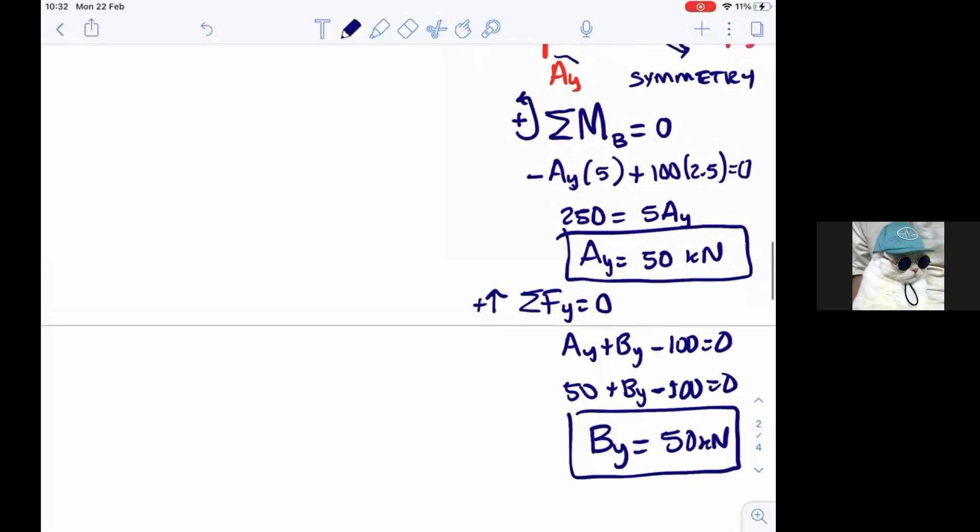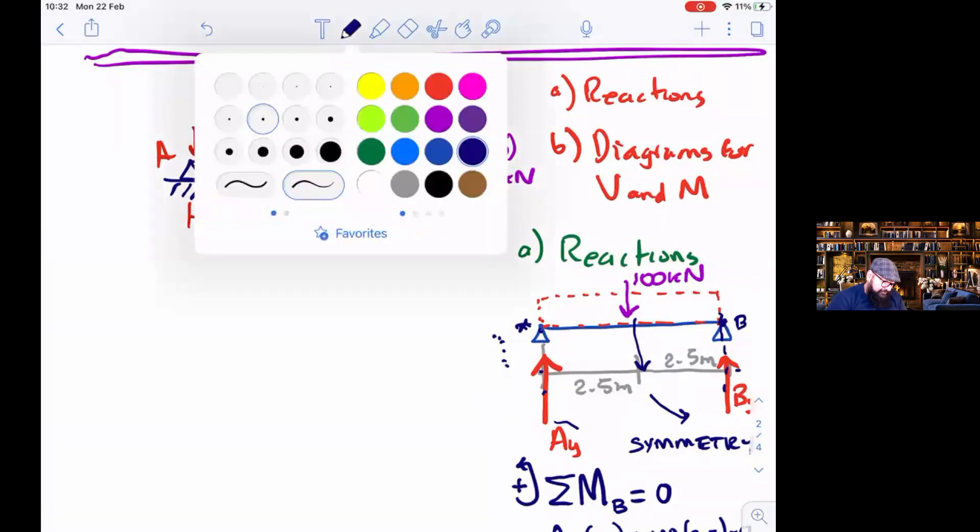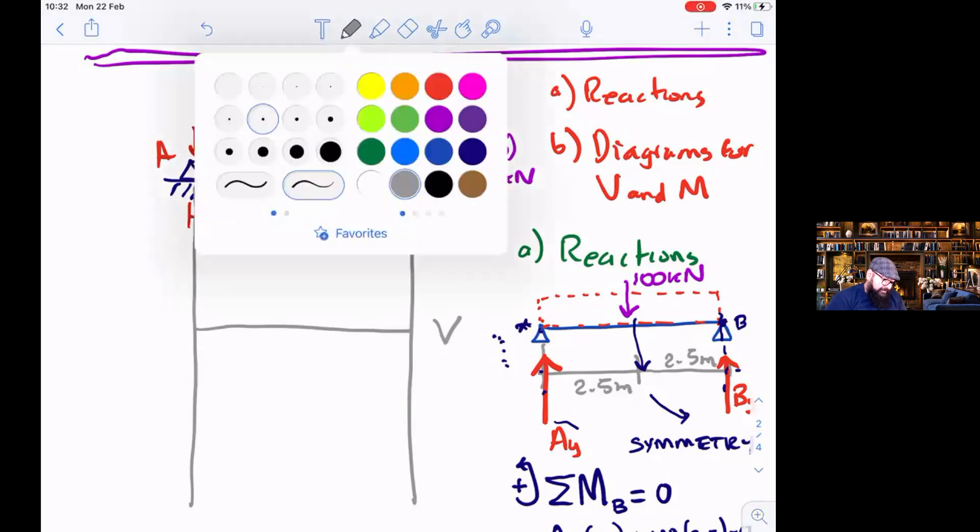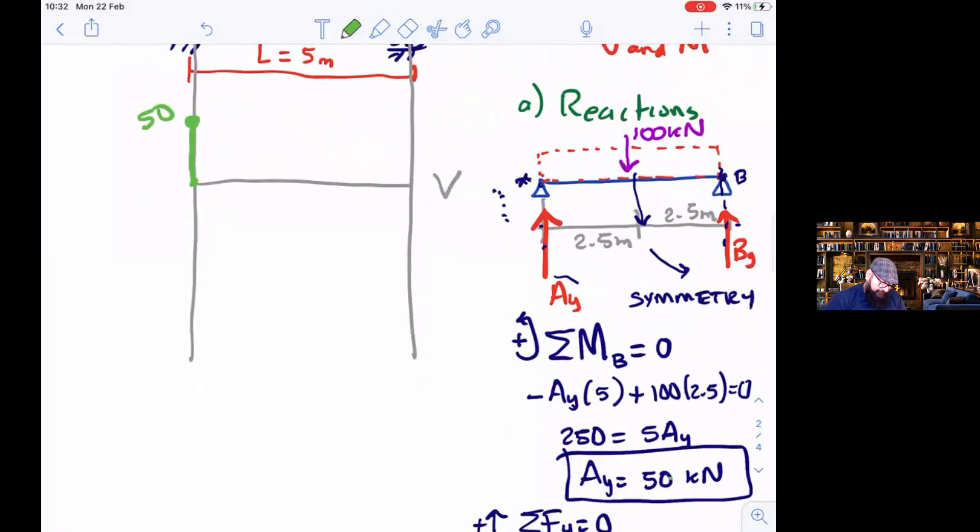Okay, now what was the first step after the reactions? The next one, we need to make the axis like this one. Now I have a value of Ay of 50. I start at zero and then I go up 50, the value of Ay. Here 50.